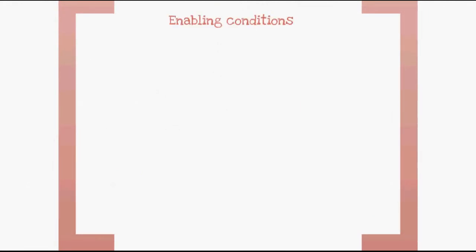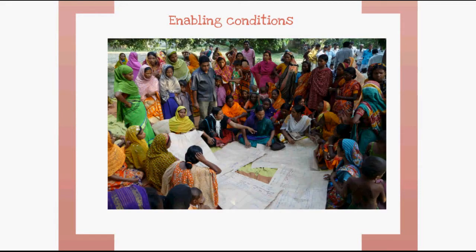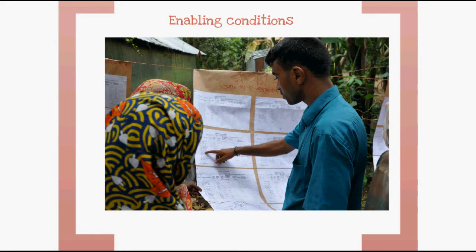So that outcome monitoring can reach its potential, some conditions need to be in place. For example, the monitoring system should be designed at an early stage of a program, and the main purpose of outcome monitoring and the roles of different stakeholders should be defined from the very beginning. Partners should be involved in all stages, and data collection should fit with the partner's planning schedule, also because considerable human resources are required for data collection and analysis. When these conditions are met, outcome monitoring can be a powerful tool for measuring progress in a participatory way, making monitoring a regular exercise for learning and project steering.